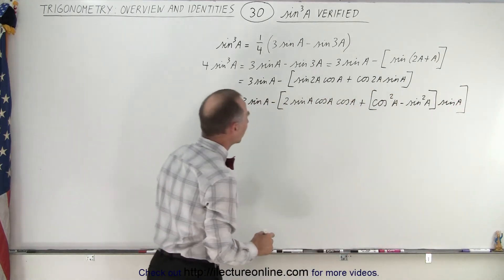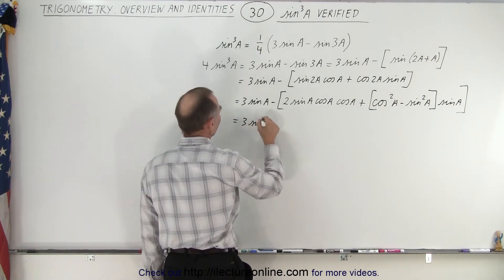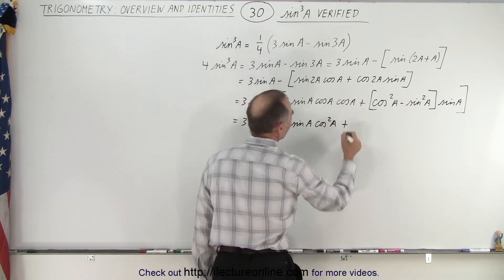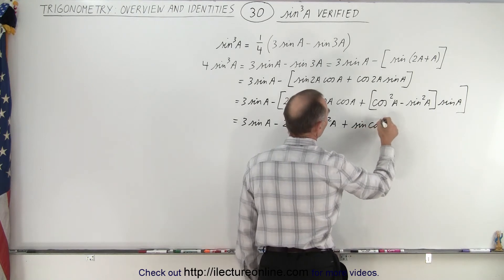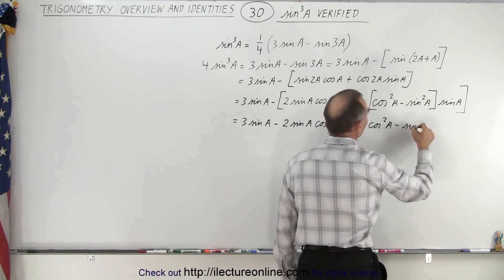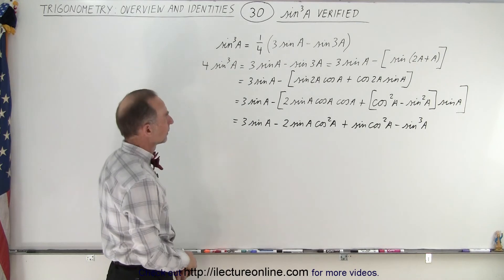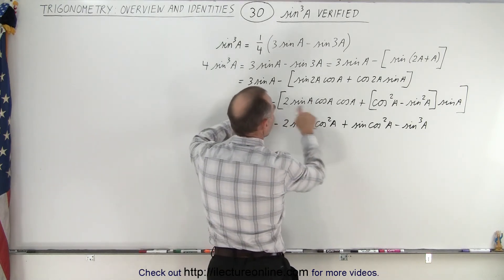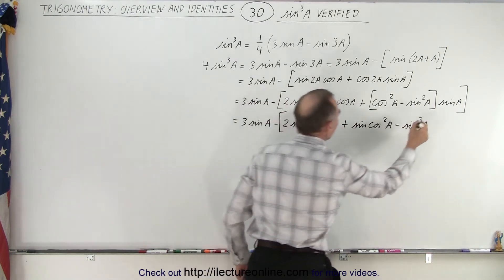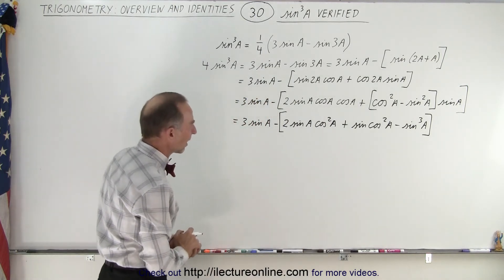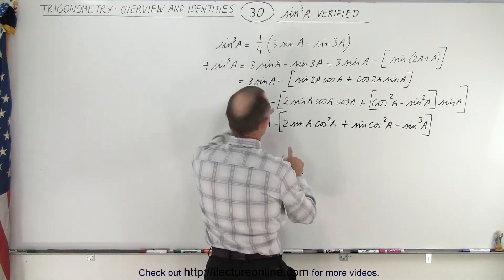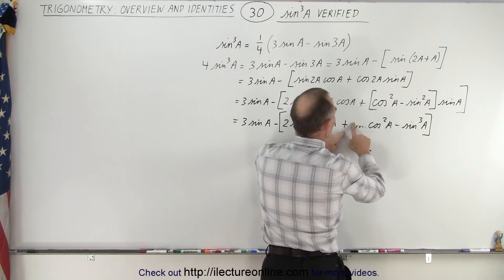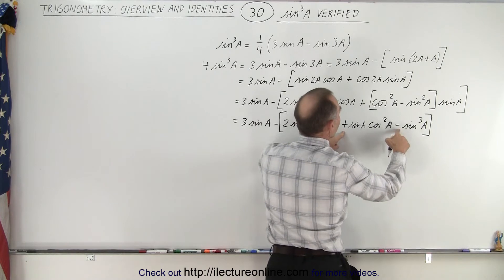Let's close the bracket. Simplifying, this is equal to 3 times sine of A minus 2 sinA cos²A plus sinA cos²A minus sin³A. Now I need to be careful with signs because I have a negative sign here. I'm going to keep the brackets to avoid mistakes: negative bracket 2sinA cos²A plus cos²A sinA minus sin³A.